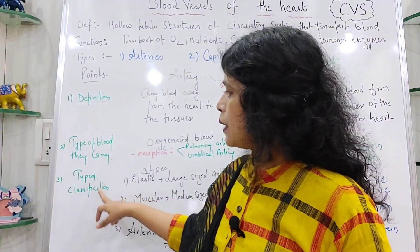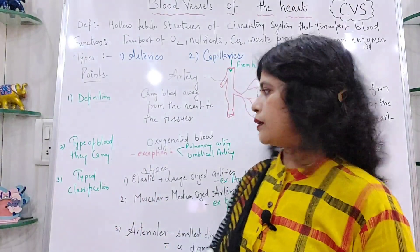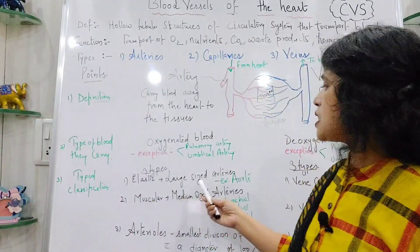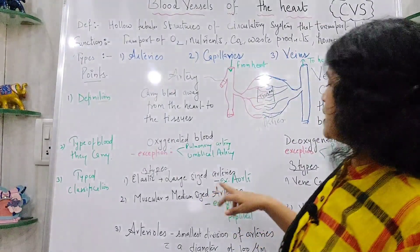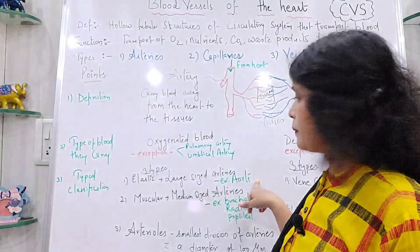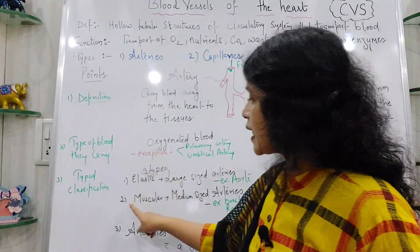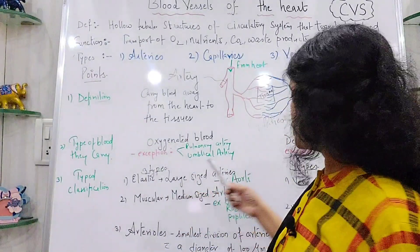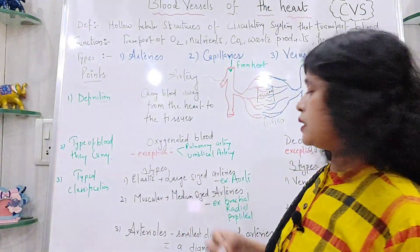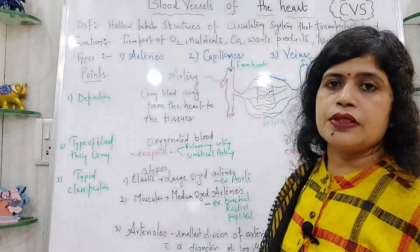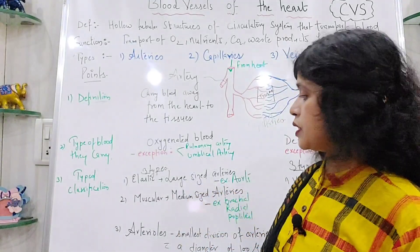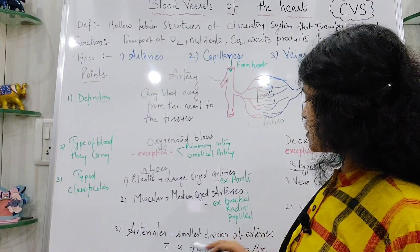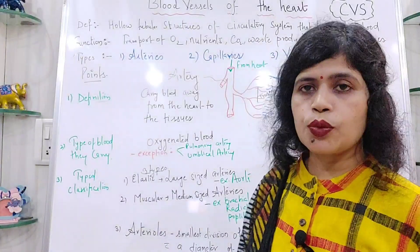Arteries are classified into three types. First is the elastic artery, also called large-sized artery — the example is the aorta, which is the largest blood vessel and largest artery in the body. Second is the muscular artery or medium-sized artery; examples include the brachial artery in the arm, radial artery, and popliteal artery. The smallest division of arteries are called arterioles, with a diameter of about 100 micrometers.